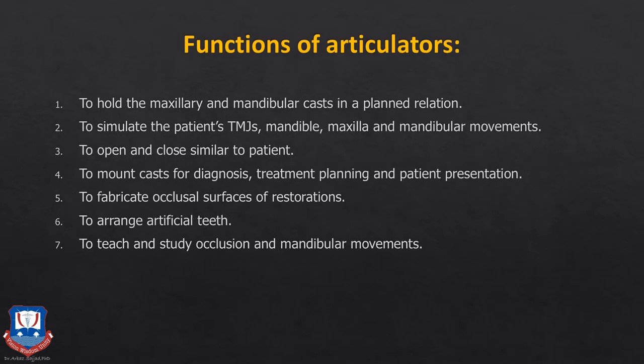Coming to the functions of articulators: the primary function of the articulator is to hold the maxillomandibular cast in the same position as it is in the patient's mouth. It should also simulate the patient's TMJ, the mandible, maxilla, and the various mandibular movements to a certain extent. It should also open and close similar to the patient — that is, in a hinge movement. You should be able to mount the cast for diagnosis, treatment planning, and patient representation. You should be able to fabricate occlusal surfaces of the restorations, arrange artificial teeth on the articulator, and teach and study occlusion and mandibular movement.